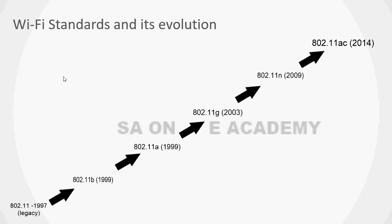As more and more devices emerge, data consumption increases day by day. For operators to offer seamless, high-speed data, they have to buy more and more spectrum, which incurs huge costs. To avoid these costs, they can offer services over Wi-Fi. Wi-Fi also has very short time-to-market compared to mobile networks, and it is cost-effective, cheap, and easy to deploy.